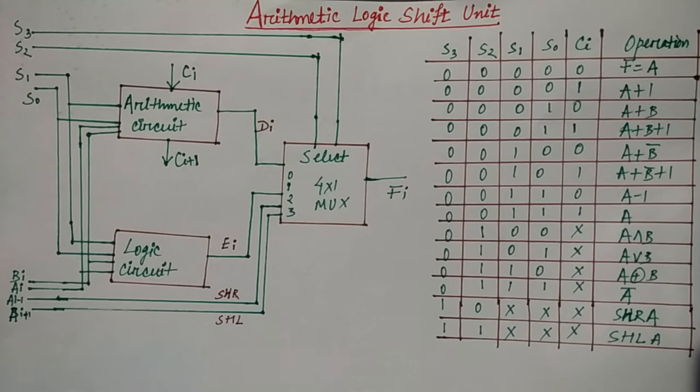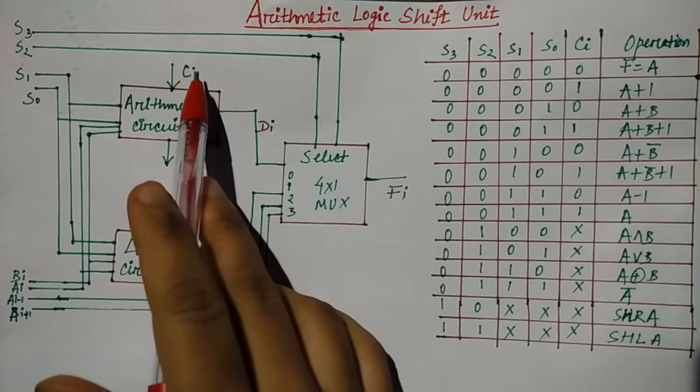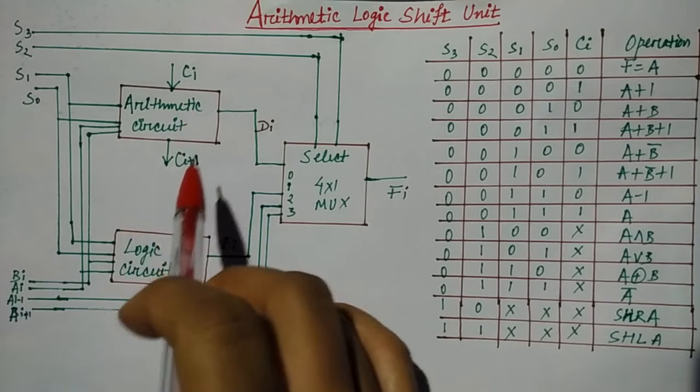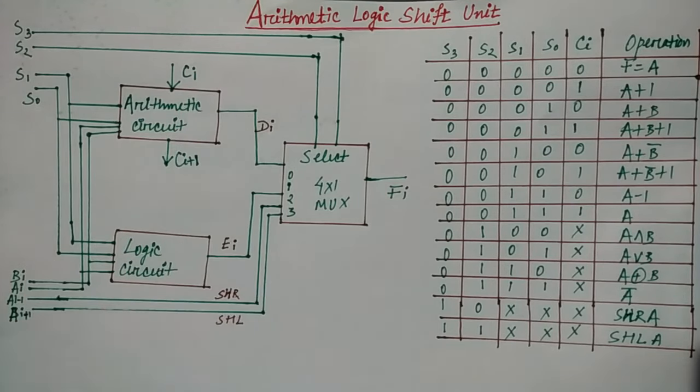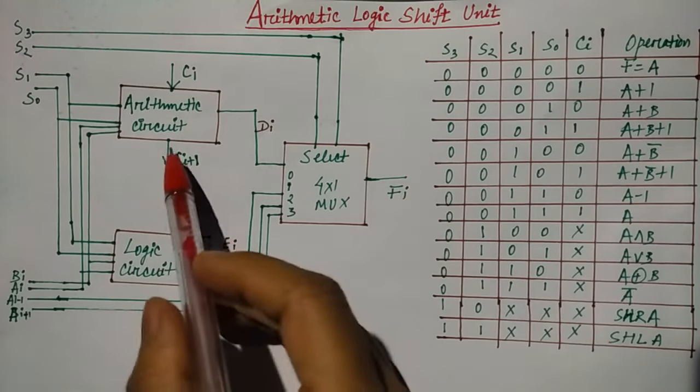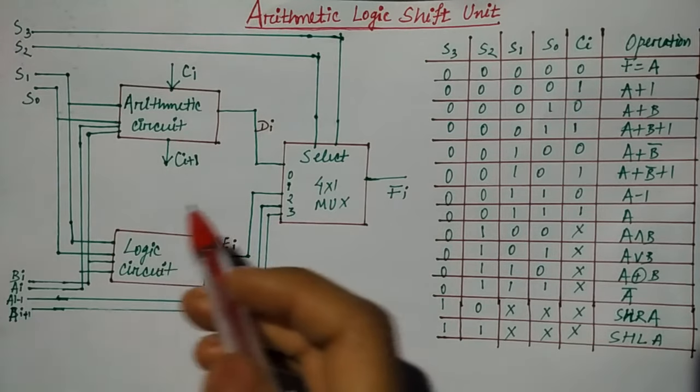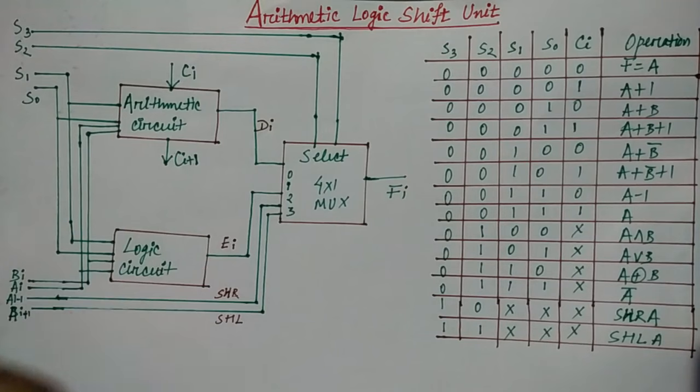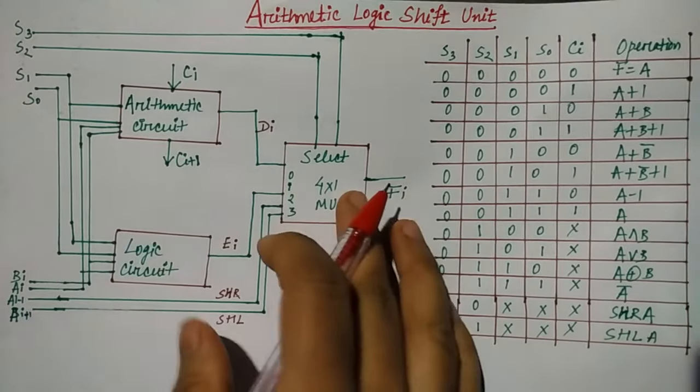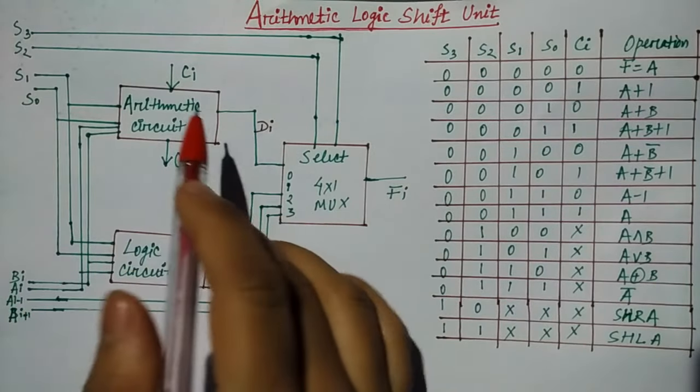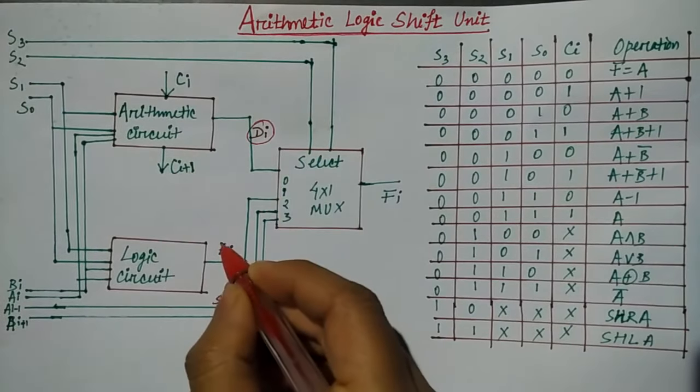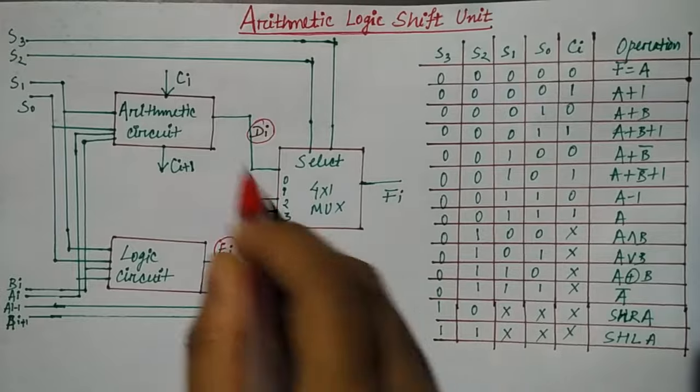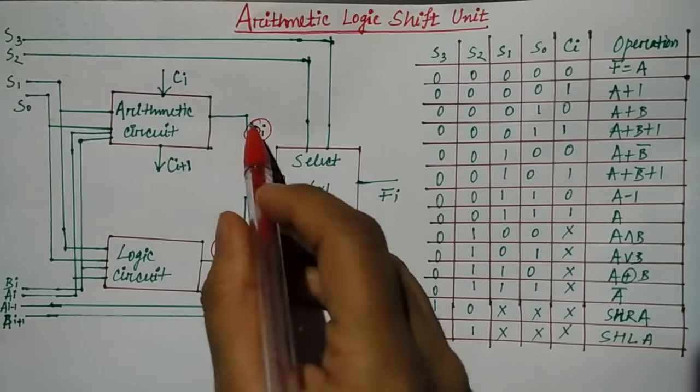In the arithmetic circuit, this CI is carry input, CI plus 1 is carry output. C basically refers to carry. So the arithmetic circuit output is DI and logic circuit is EI.